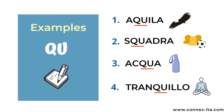In the following examples, the letter Q is in the middle of the word. Aquila — aquila is the eagle. Squadra — squadra means team. Acqua — acqua is the water. And tranquillo — tranquillo means calm. Let's read them together.